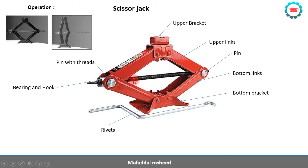There is a lead screw over here, which is the main functional element. Upper links connect to the pin, and there is a top bracket which connects to the vehicle body. When you rotate the hook using a handle, the rotation of the screw causes a linear movement of the two center pins relative to each other — they come closer together. Because of the kinematic linkage, the top bracket moves upwards, causing the jacking action.